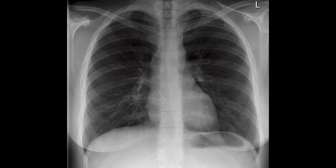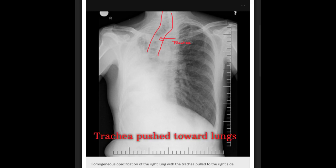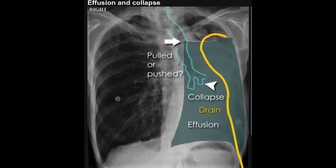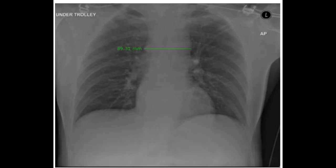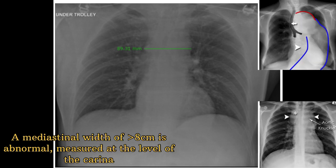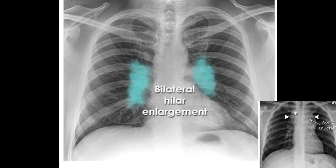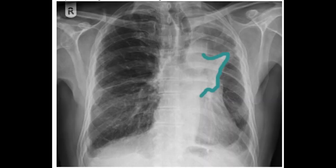That's what a normal chest X-ray looks like when you go step by step. Now let's use the same ABCDE system to spot abnormalities. For abnormal airways and mediastinum: if the trachea is pulled towards the lung, there may be collapse or fibrosis; if pushed away, suspect effusion or tension pneumothorax. A widened mediastinum suggests aortic aneurysm, dissection, or trauma. Hilar enlargement is usually seen in lymphadenopathy and pulmonary hypertension.